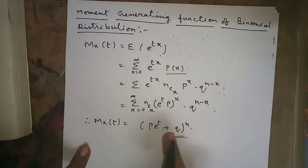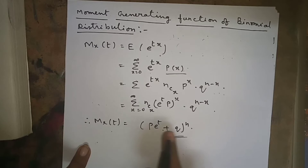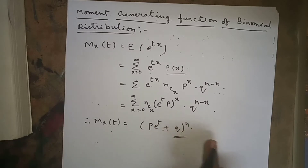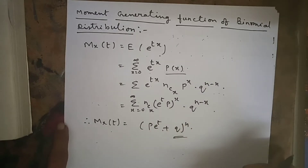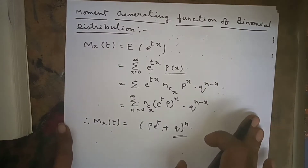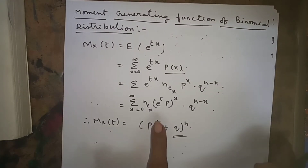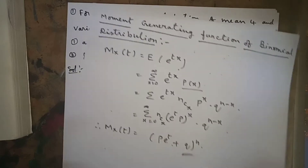This is the binomial theorem expansion, similar to (a+b)^n. So the moment generating function of binomial distribution is M_x(t) = (p*e^t + q)^n.